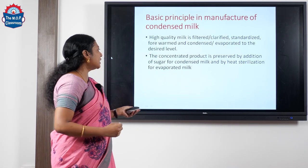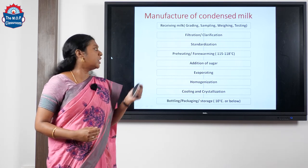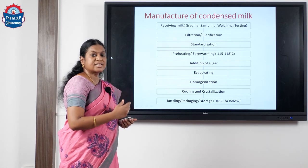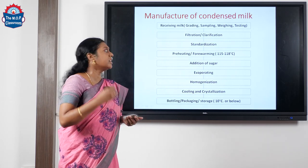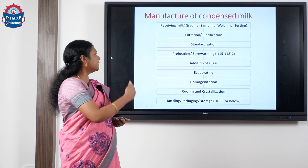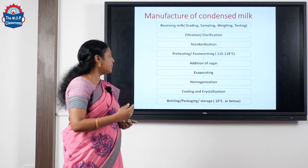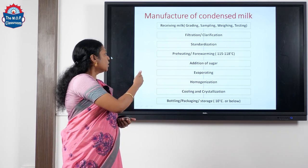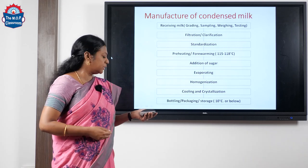In today's class, we'll talk about the manufacturing process of sweetened condensed milk. Here is a flow chart — you can have a look. The steps are: first, receiving milk, where we grade, do sampling, weighing, and testing. Then filtration and clarification, followed by standardization, preheating, addition of sugar, then the main process of evaporation, then homogenization, cooling and crystallization, and finally bottling and packaging.